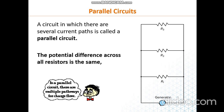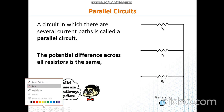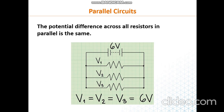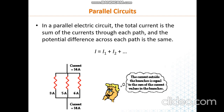Now let us remember the meaning of a parallel circuit. A parallel circuit is a circuit where there is more than one branch or several paths for the current to flow. What is special and unique about parallel circuits is that the potential difference across all resistors is the same. So if I have three resistors connected in parallel, the voltage across all of them equals the voltage of the battery. If the battery provides 6 volts, that is the voltage across R1, R2, and R3.